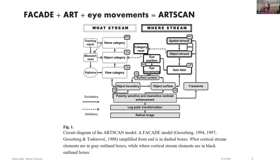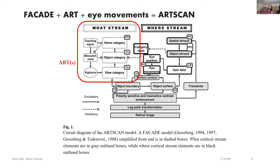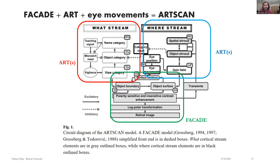We've stepped one more level up. Now we have FACADE and we're going to add adaptive resonance theory and some eye movement to get ARTSCAN. Not all types of movement are included yet. There's at least one ART network of the sort we talked about, and also another ART feeding into the FACADE system. So you can get boundaries and features of static objects — but what happens when the eyes move?